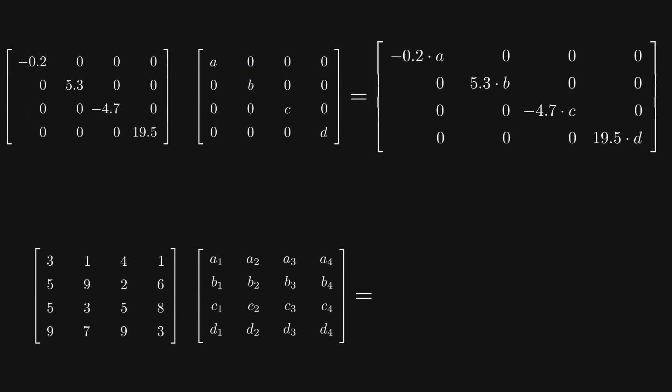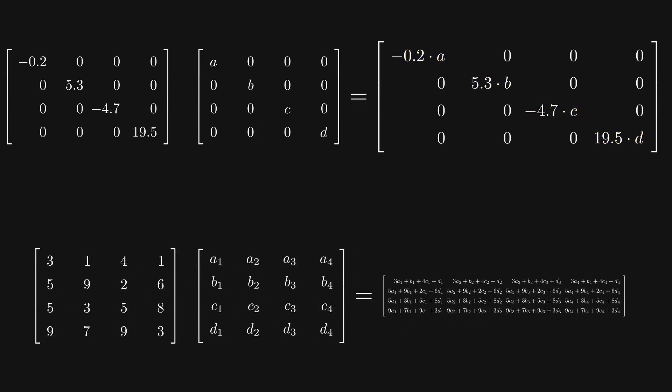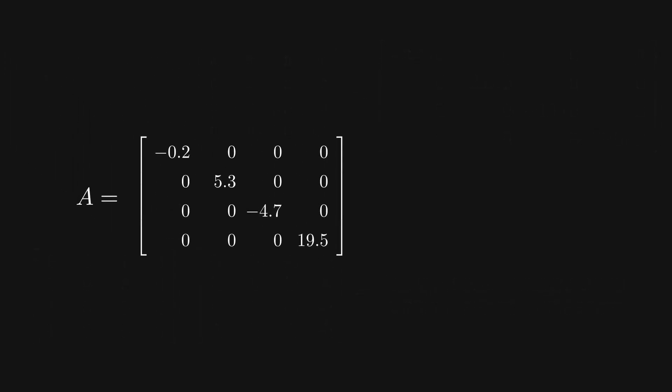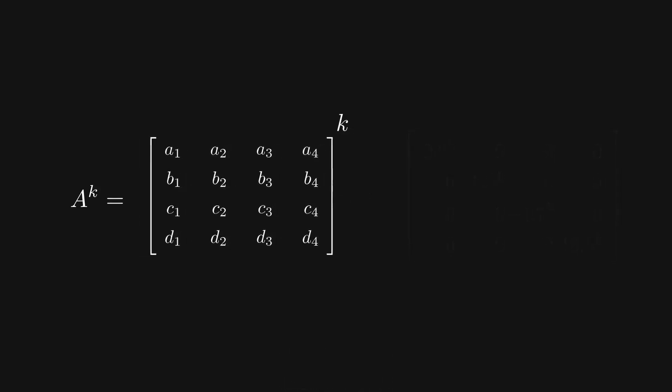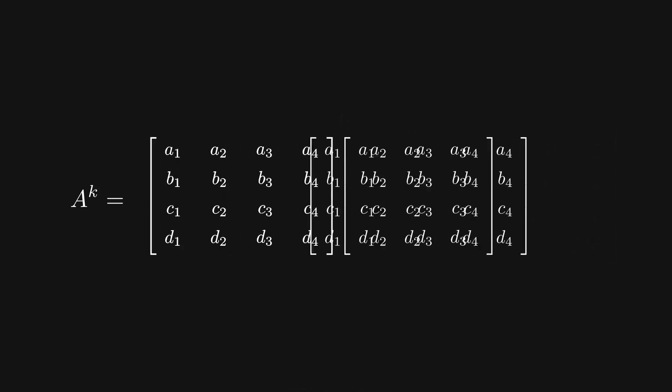Now this matters because the formula for multiplying two diagonal matrices takes only n multiplications if it has n rows, which is significantly less than the n cubed multiplications it takes to multiply non-diagonal matrices. Now this may not seem like a big deal, but when we want to repeatedly multiply large matrices, like taking a matrix to the kth power, these differences stack up in a major way.